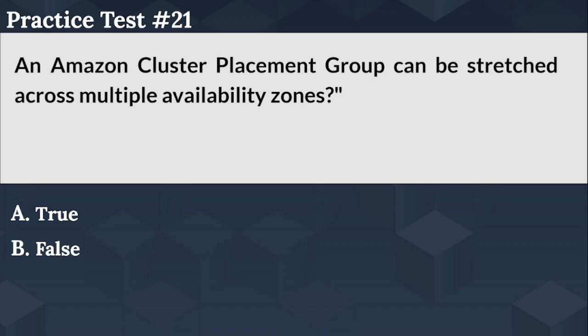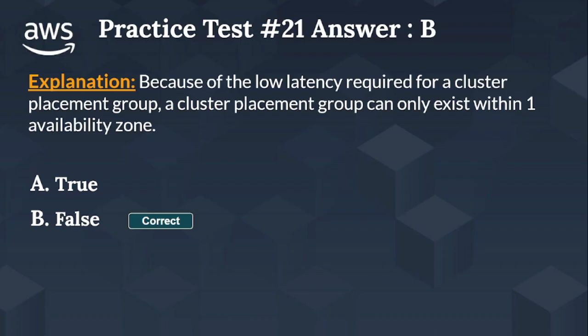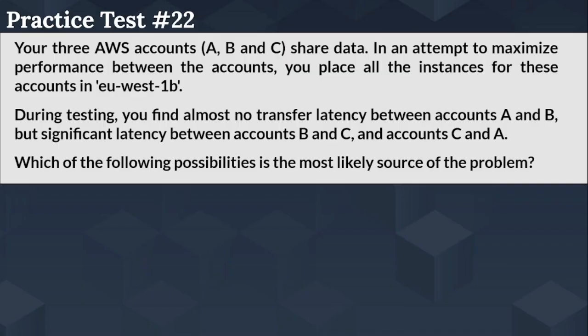The right answer is Option B, false. Because of the low latency required for a Cluster Placement Group, a Cluster Placement Group can only exist within one availability zone. Let's move on to the next question for the AWS Solution Architect Associate exam.